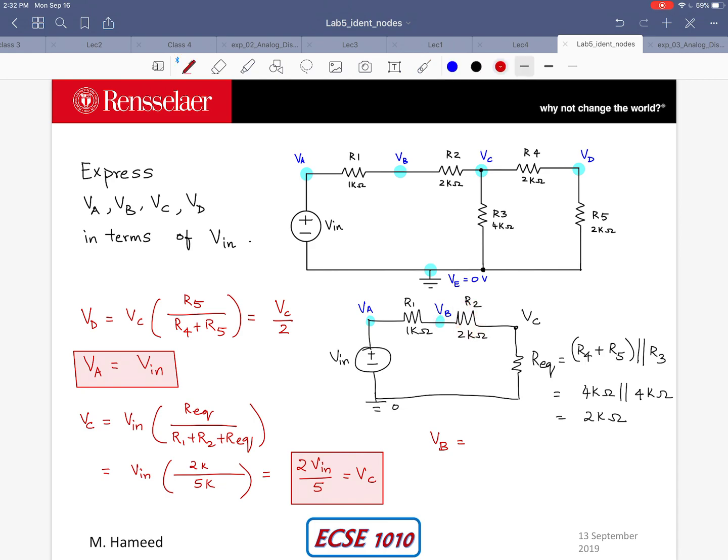So VB is going to be voltage across R2 which is Vin multiplied by R2 divided by R1 plus R2 plus R equivalent which essentially simplifies to 2Vin divided by 5. I also need to add VC to this. So I add VC to this which is also 2Vin divided by 5. So that simplifies to 4Vin divided by 5 for VB.